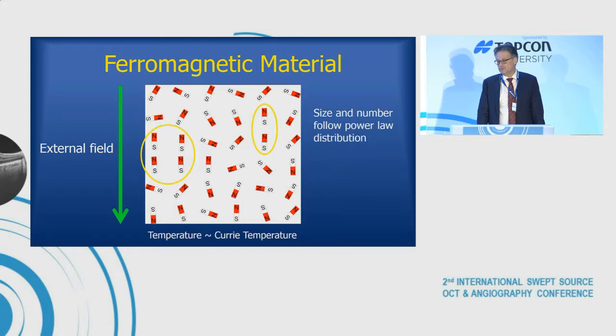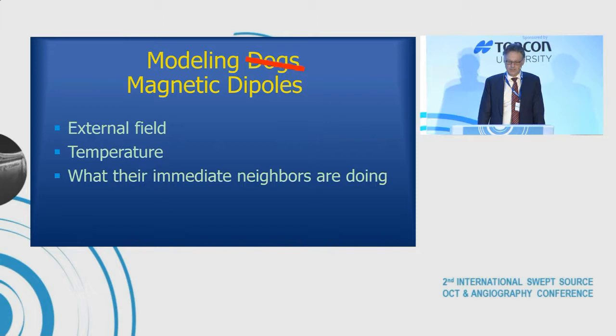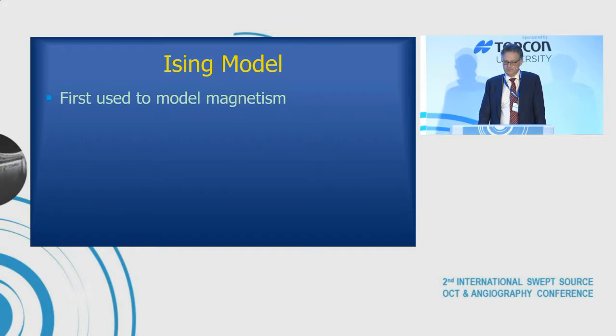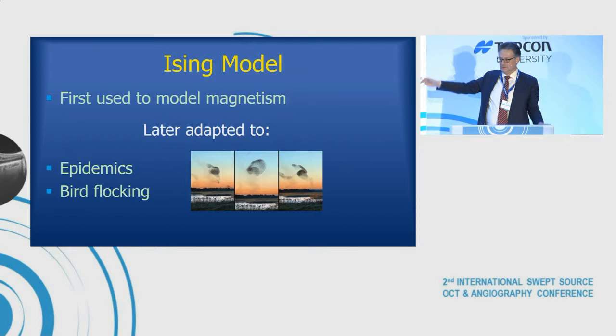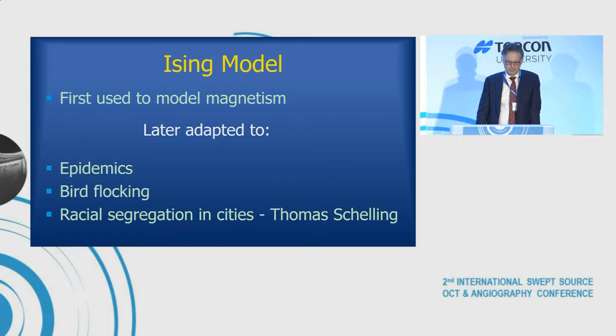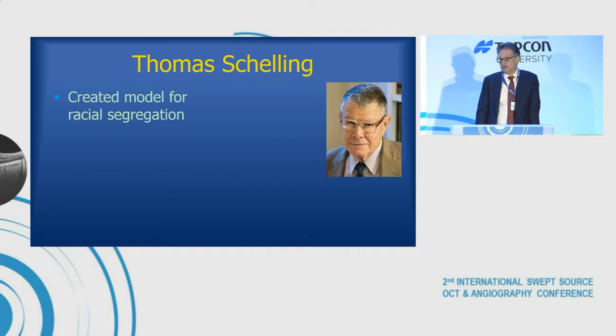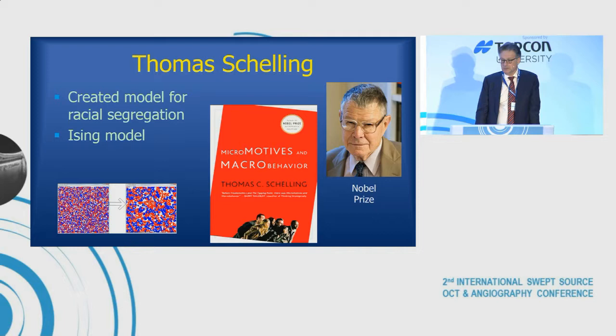To make magnetic dipoles align, you need an external field, a temperature low enough, and you have to care about what neighbors are doing. That whole model is called an Ising model — a fairly simple model to make. People have then adapted the Ising model to epidemics, or how birds flock. Starlings flying in those bizarre patterns — each starling only looks at its nearest six neighbors and controls its flight on that basis, yet somehow they end up making amazing flocking patterns. Thomas Schelling created a model for racial segregation based on the same idea and won the Nobel Prize.